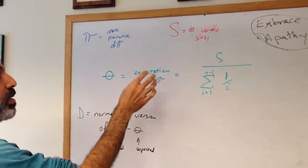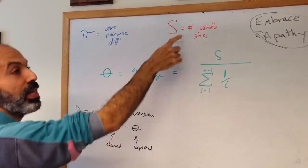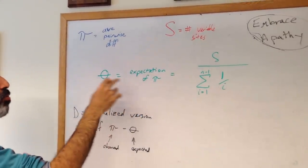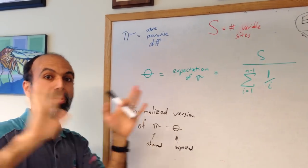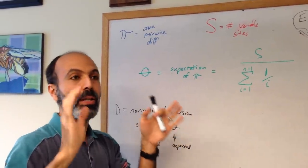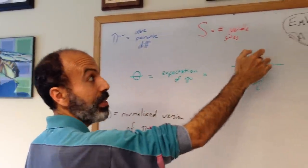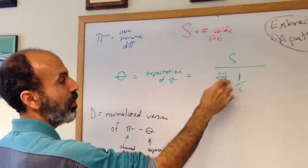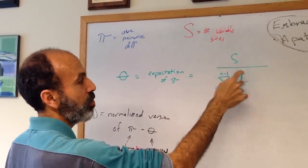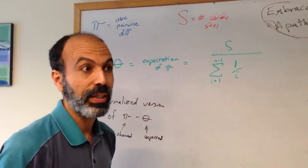There is an expectation for pi that's related to S. This expectation is referred to as theta. When there's nothing else going on, when you have a purely neutral population where the only things happening are mutation and drift, the expectation of pi is S divided by the summation from 1 to n minus 1 of 1 over i, where n is the number of sequences you're looking at.